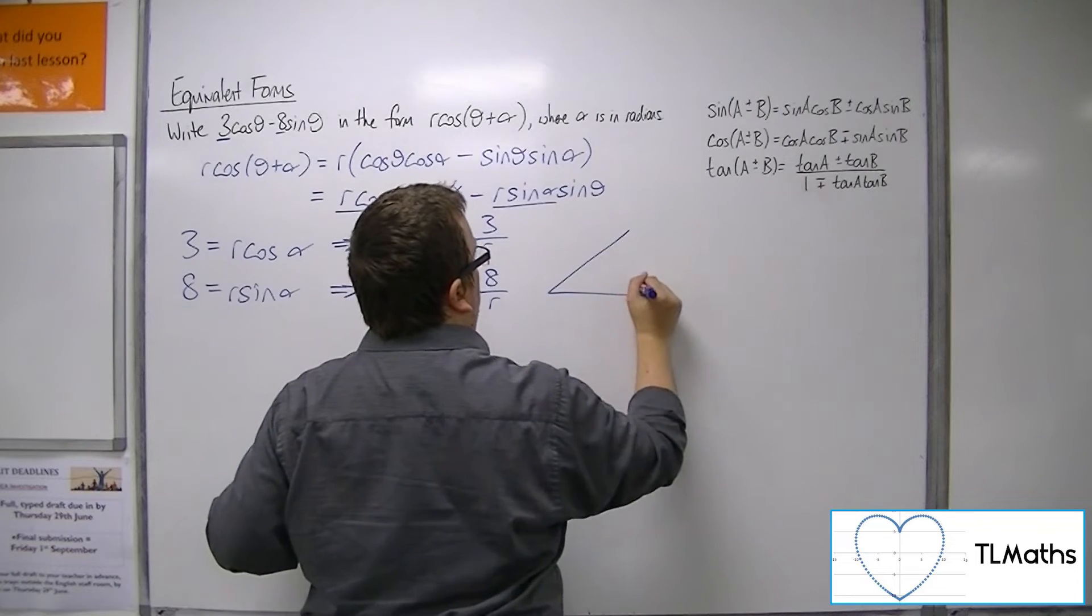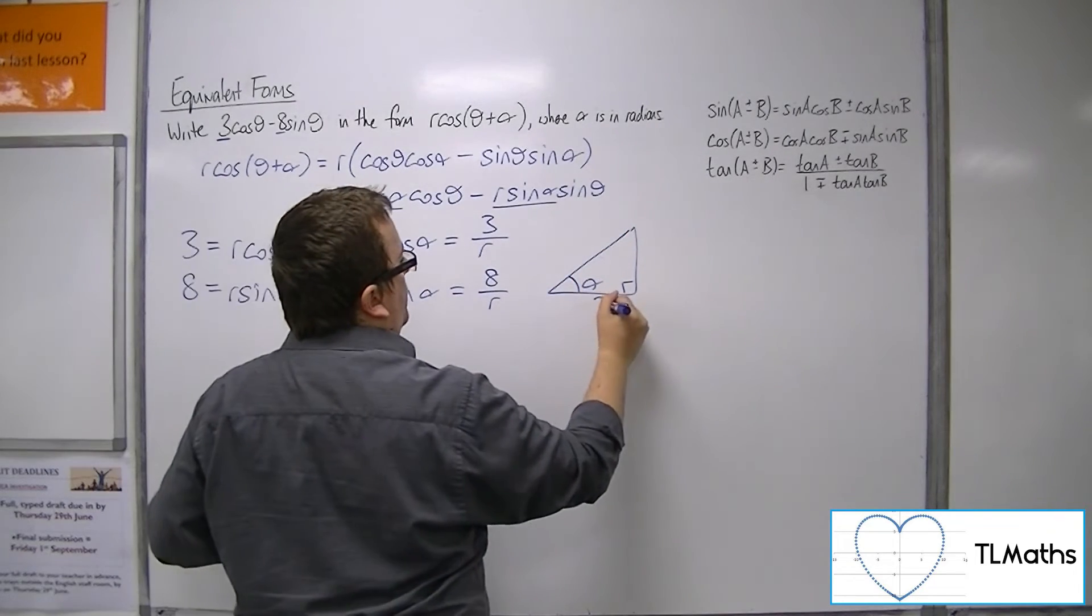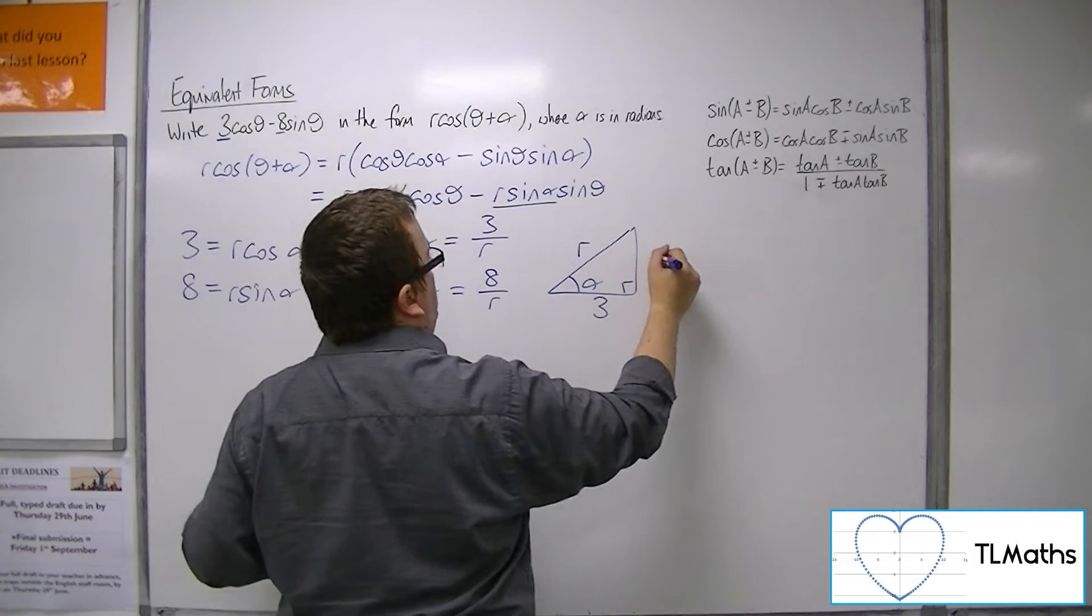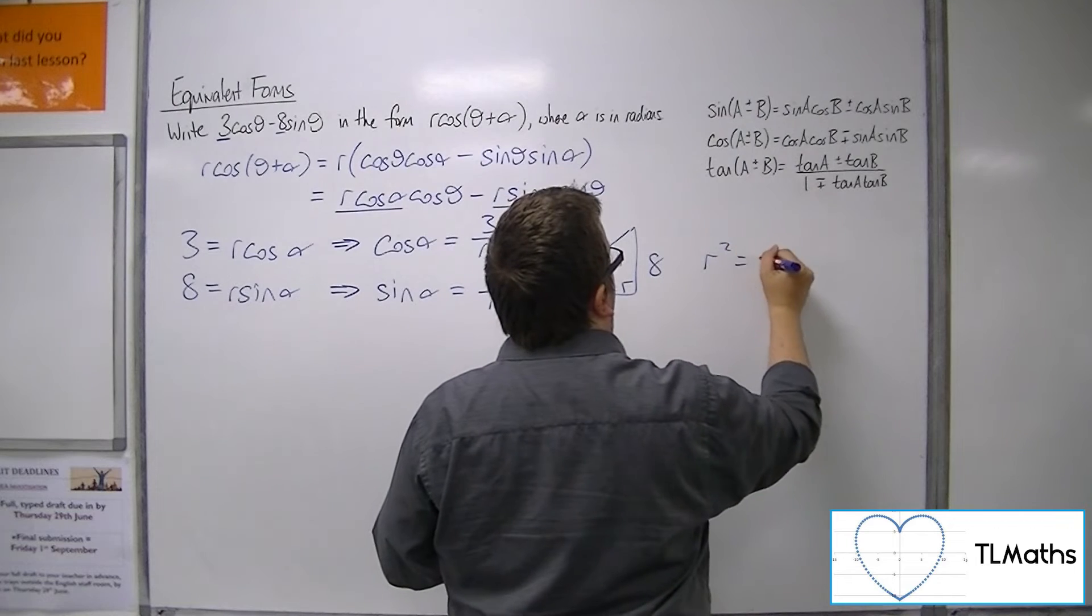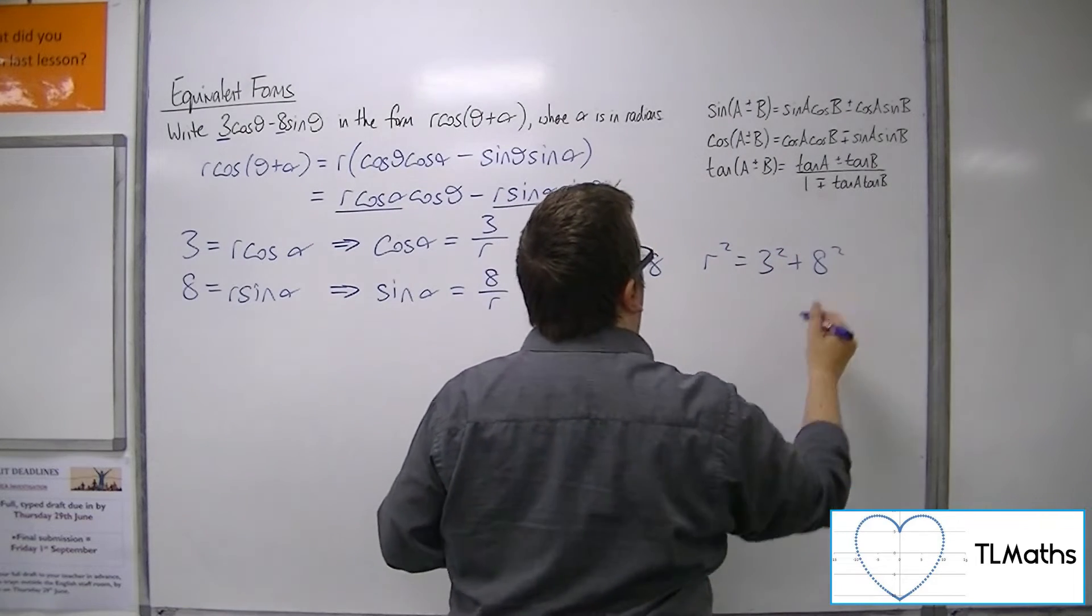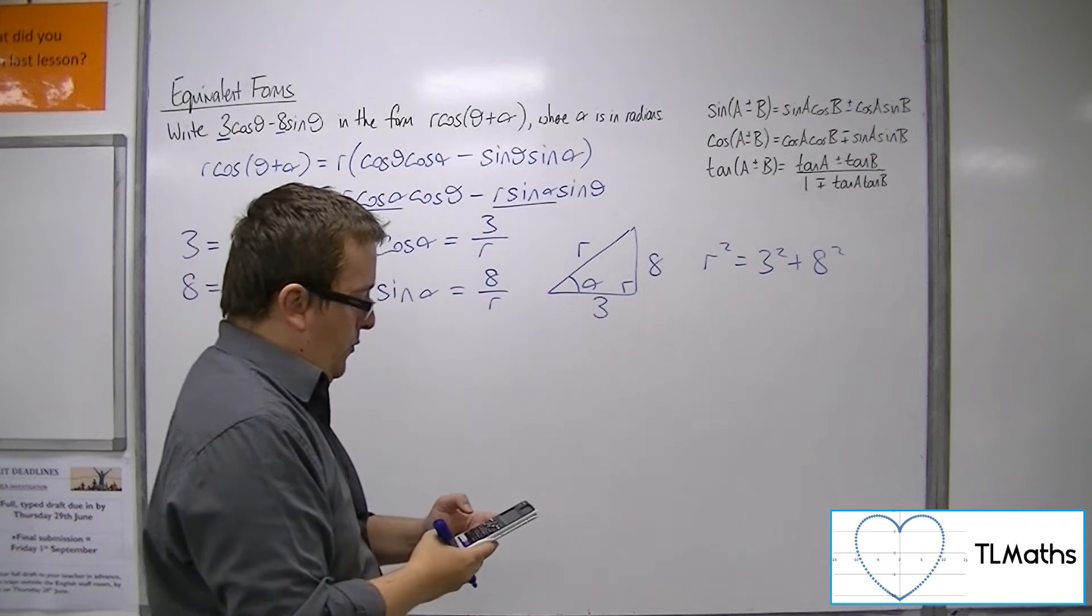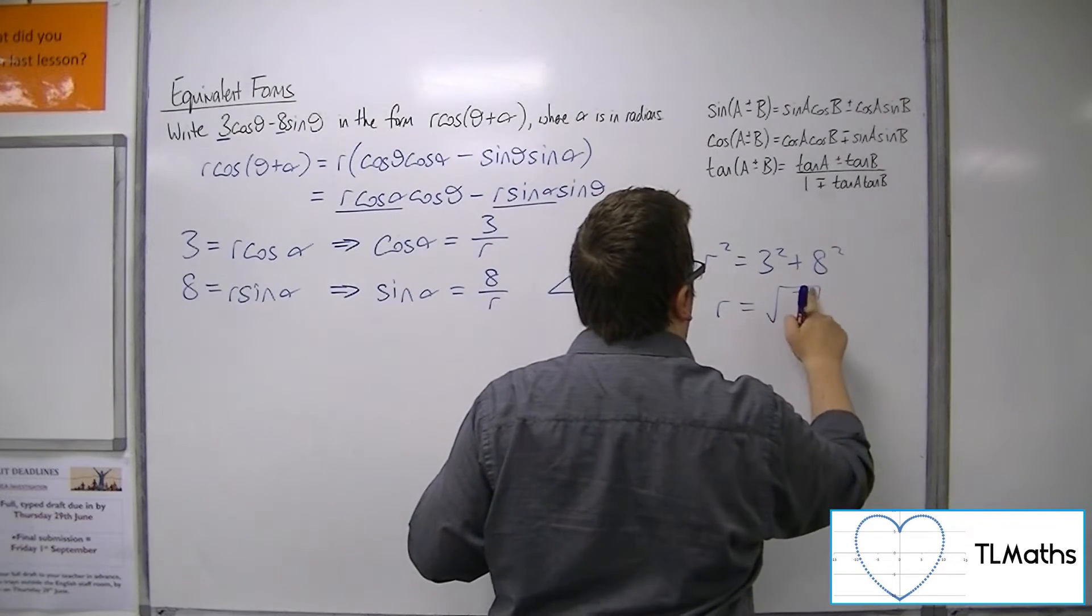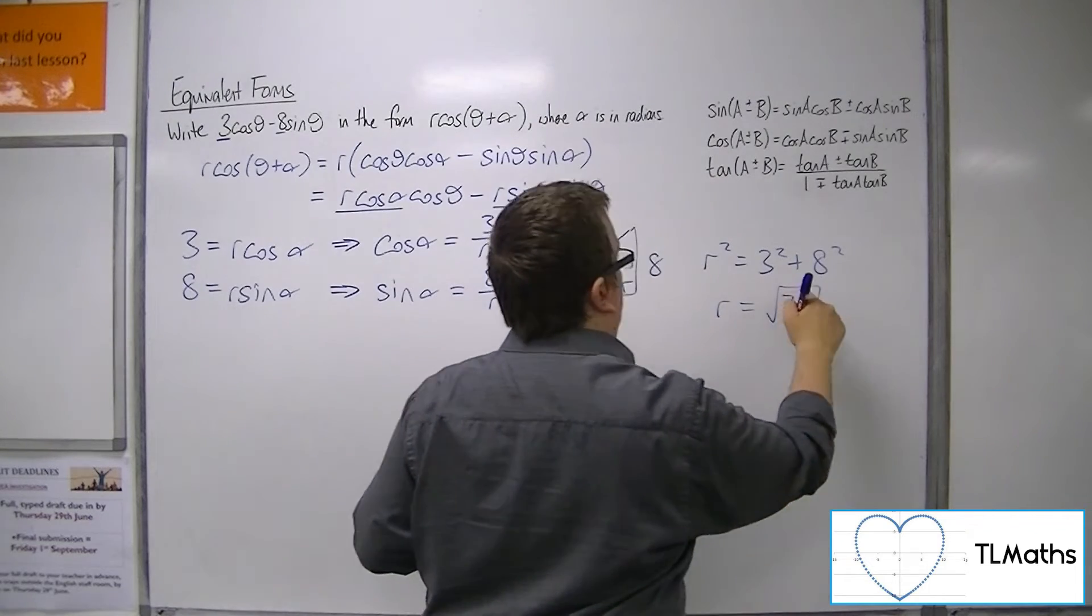Draw a right angle triangle. There's your alpha, so that must be 3 and r, 3 must be the adjacent, 8 must be the opposite. So r squared must be 3 squared plus 8 squared. So 3 squared plus 8 squared is 73, so r must be the square root of 73.